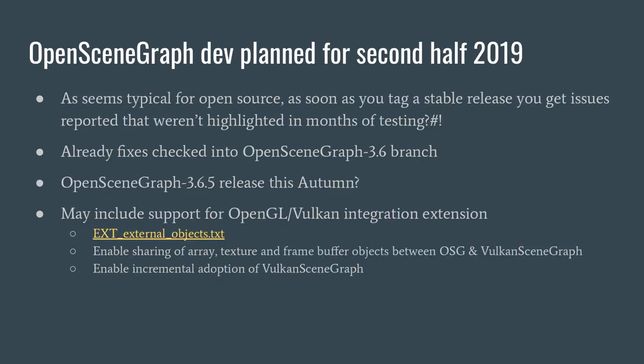The next plan for the rest of this year is to get 3.6.5 out this autumn. That will contain bug fixes. I've already made a bug fix related to the default font system and how that's cached within OSG text. As typical with an open source project, as soon as you make a release somebody reports a problem. I'll be making another point release likely this autumn to wrap up that fix and any other issues that come up once you start testing 3.6.4 in the wild.